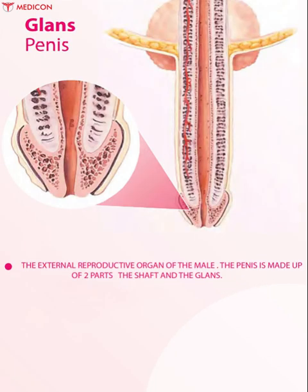Glans penis: the external reproductive organ of the male. The penis is made up of two parts — the shaft and the glans. The glans is the tip of the penis, and the shaft is the main part, containing a tube called the urethra that drains the bladder.